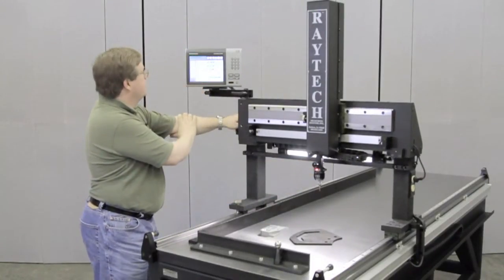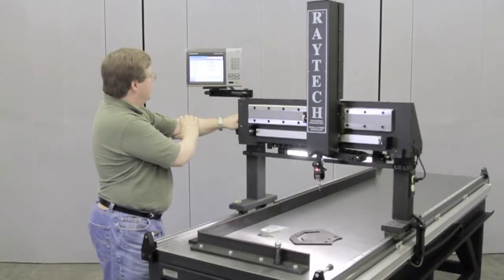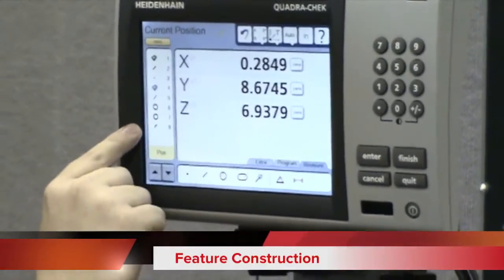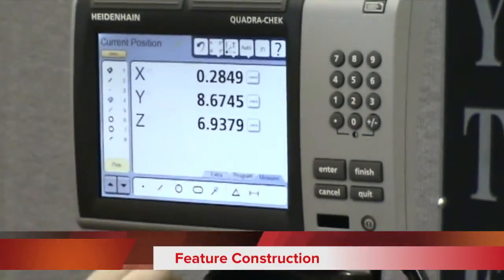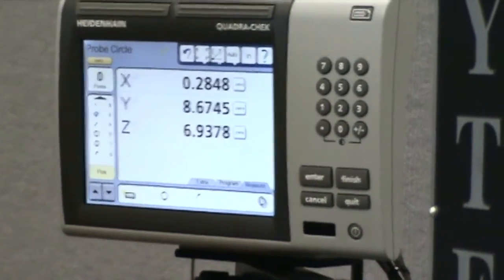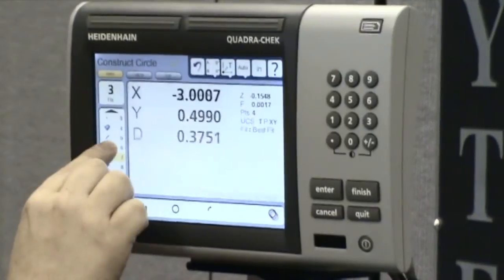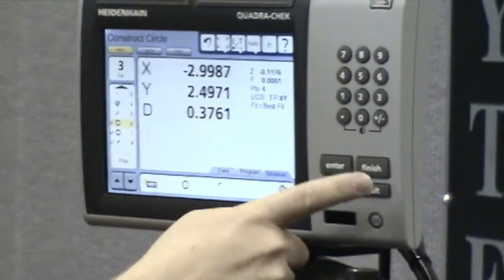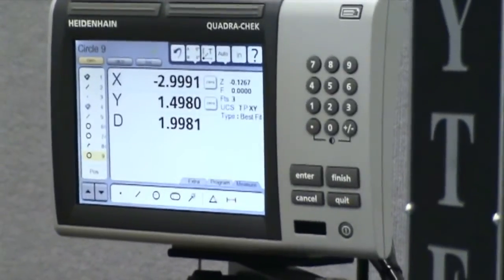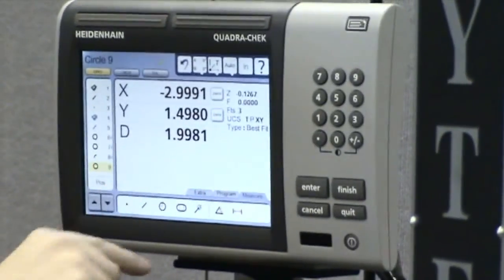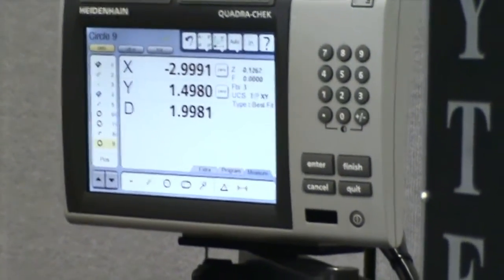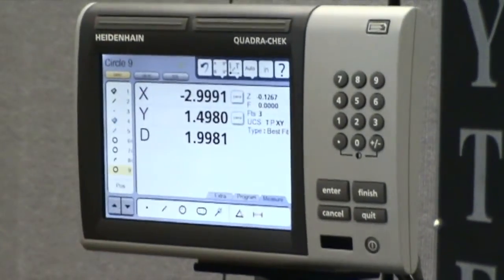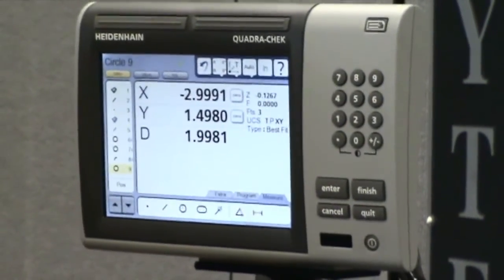We can come up and construct a circle through the centers of those two holes and that arc that we just measured. We'll measure a circle, go into our feature list and check each one of those. We've got three features, hit finish. Now we get the circle that goes through those centers, we got an x-y position for that and the diameter of that circle.